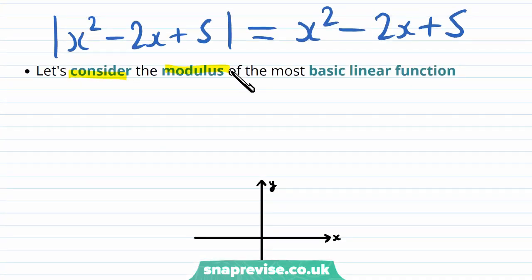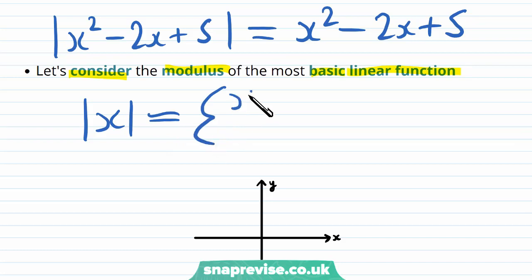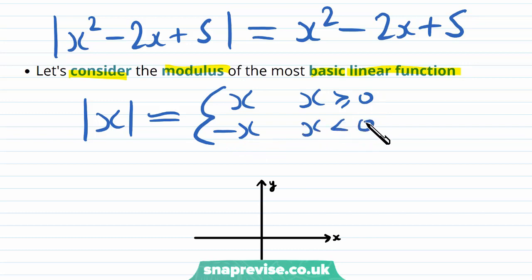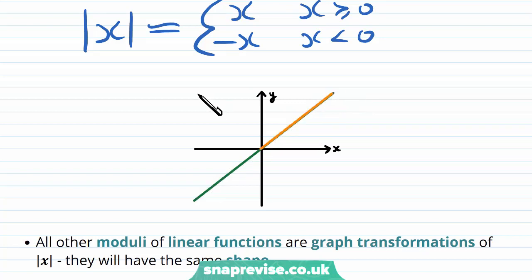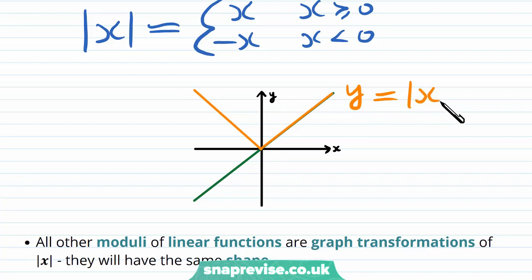Now let's consider the modulus of the most basic linear function. If we take the modulus of x itself, by definition that's the same as x if x is greater than or equal to zero, or minus x if x is less than zero. If we sketch the graph of y equals x we get the following. However the modulus makes this positive, and therefore the graph of the modulus of x reflects the negative part up in the x-axis. So this orange line is the graph of y equals mod x — we say 'mod' as short for modulus.